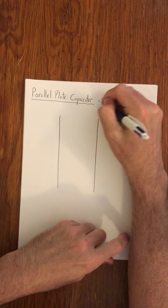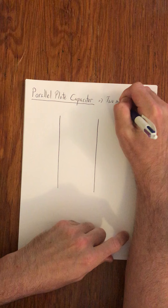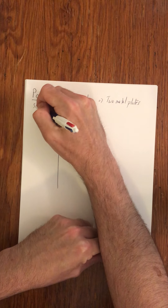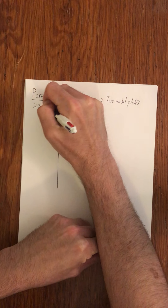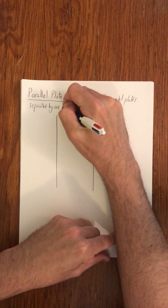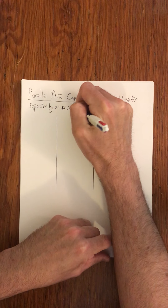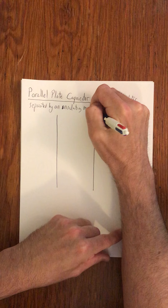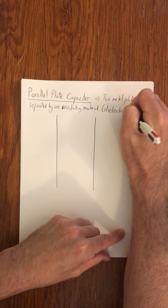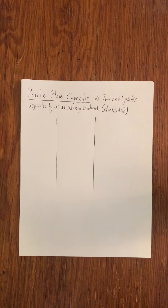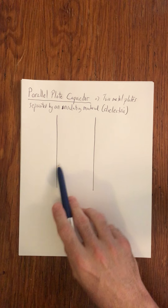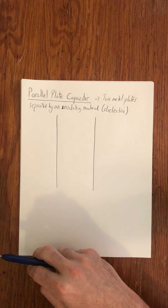It is two metal plates separated by an insulating material, often called a dielectric. So two metal plates separated by an insulating material. Let's say that my insulating material here is dry air or vacuum or something - we're not going to get too complicated.